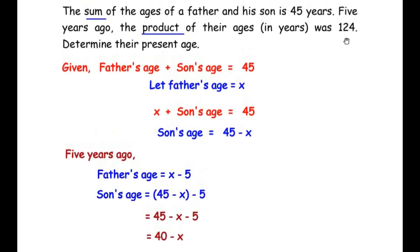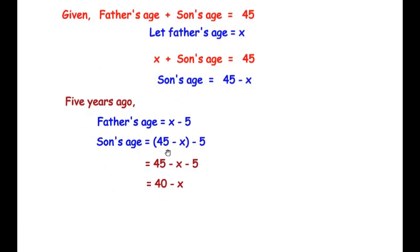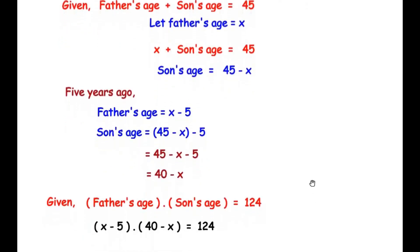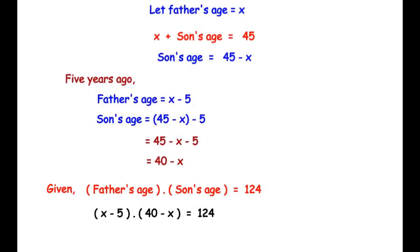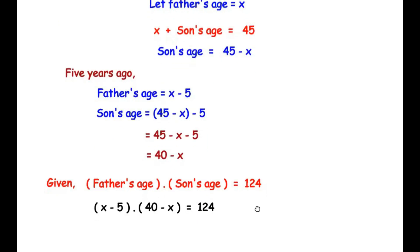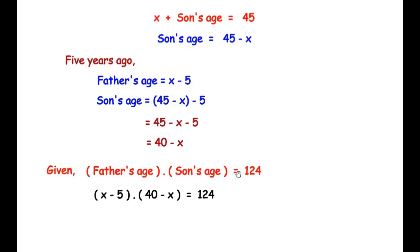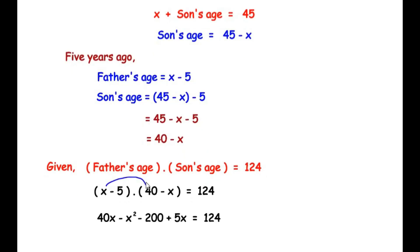Coming back to the statement: five years ago, the product of their ages was 124. We frame the equation as father's age times son's age equals 124, which is (x minus 5)(40 minus x) = 124. Expanding using the FOIL method: x times 40 gives 40x, x times negative x gives negative x squared, minus 5 times 40 gives minus 200, and minus 5 times negative x gives plus 5x. This equals 124.